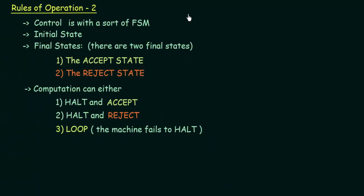Coming to the second set of rules of operation: the control is with a sort of finite state machine, as shown in the diagram at the start of this lecture. The control or program is similar to a finite state machine or a PDA, though it may not be exactly a finite state machine. We have our initial state as usual. Coming to the final states, there are exactly two final states in a Turing Machine: the accept state and the reject state. If a string is accepted, then the Turing Machine goes into the accept state; if a string is rejected, then the Turing Machine goes to the reject state.